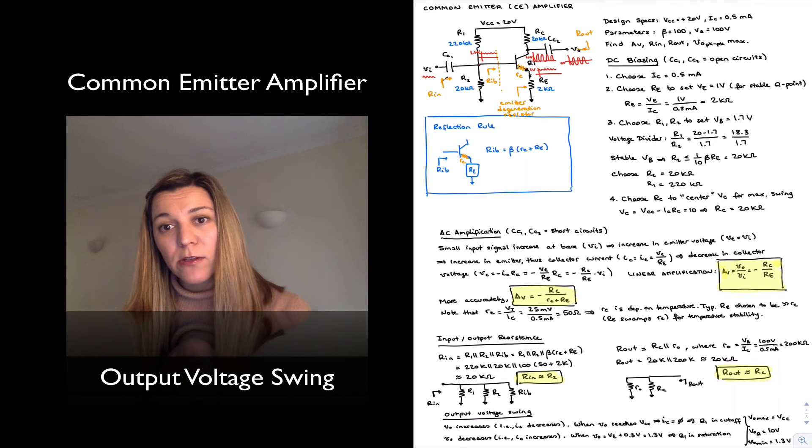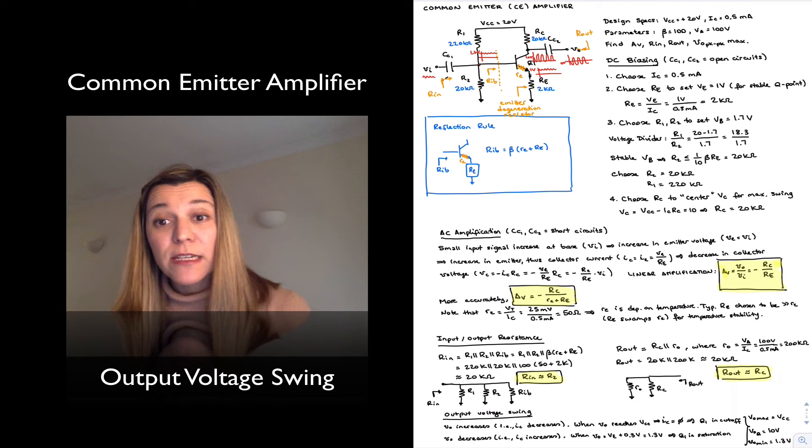On the negative side, we can go from 10 volts, the DC point value, all the way to 1.3 volts. So we only have 8.7 volts of signal swing.